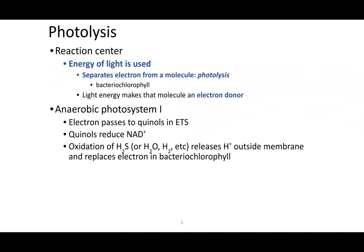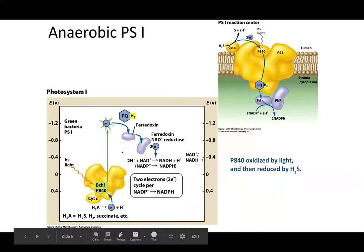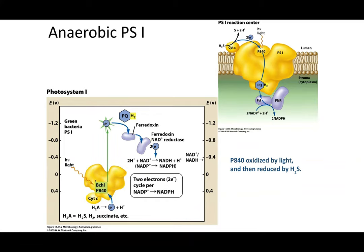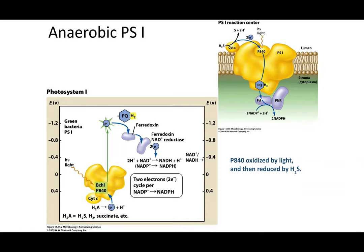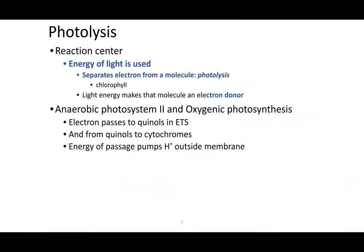Looking at a schematic of photosystem I: high-wavelength light comes in hitting the bacterial chlorophyll, and because of photolysis, an electron is separated and donated, jumping in energy and passing down the electron transport chain, ultimately ending at a reductase enzyme which produces the high-energy molecules we need. That's how photolysis contributes to photosystem I.